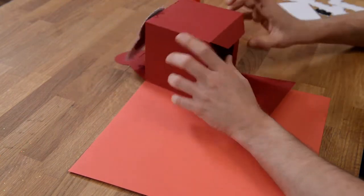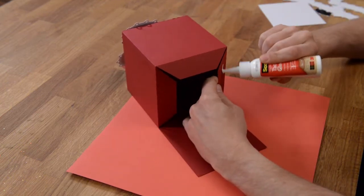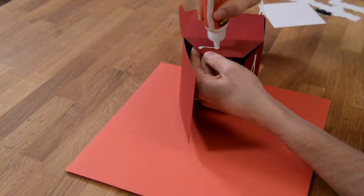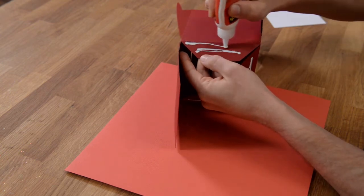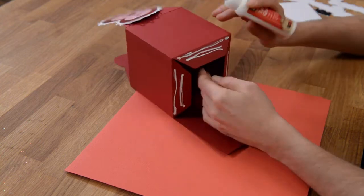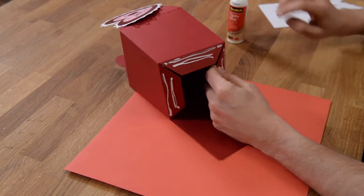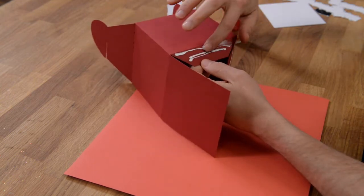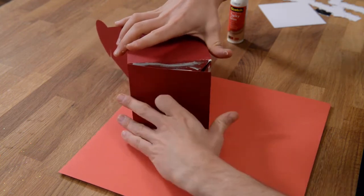We can go ahead and glue the bottom on. So I'm going to go ahead and put glue on all these tabs here and then also get a nice thin line out to the edge. And if you can be careful with your glue bottle, that's great. If you can't, then there's always your finger that you can use to spread that thin and out to the edge, just to make sure that you've got a nice clean finish.